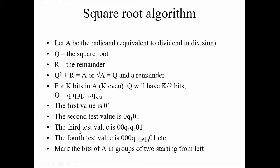Similarly, the third test case value is 00, Q1, Q2, 01, and the fourth test case value is 000, Q1, Q2, Q3, 01. If you don't understand right now, don't panic — it will become clear in the example. Also note: mark the bits of A in groups of 2 starting from the left, and the number of bits in A will always be even.